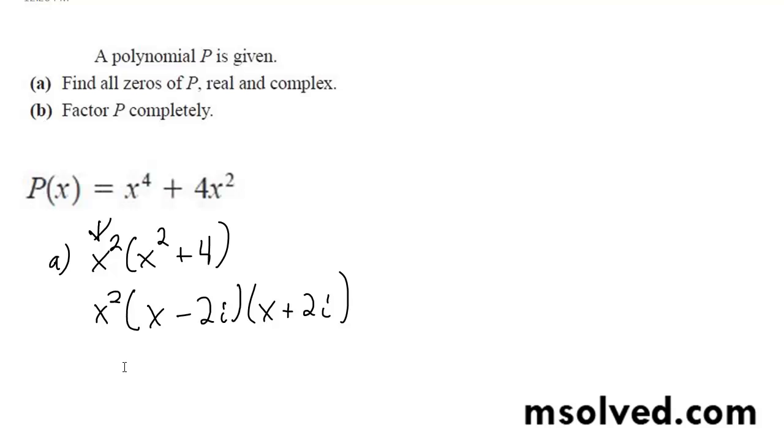And the double root is 0, so your roots, you've got 0, technically 0, 0. And then negative 2i and plus 2i.